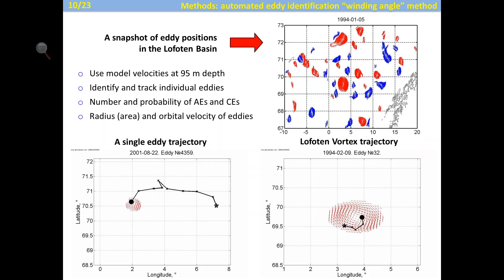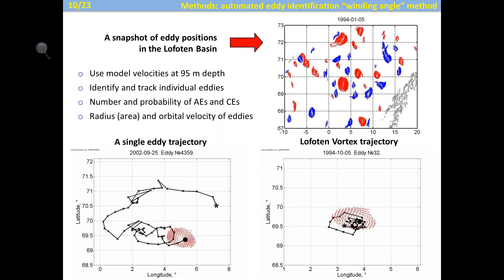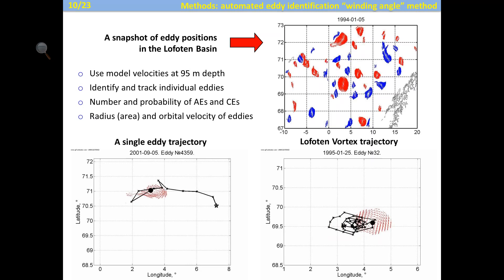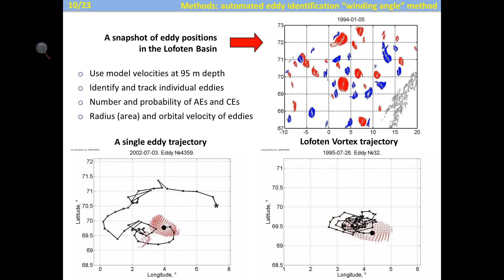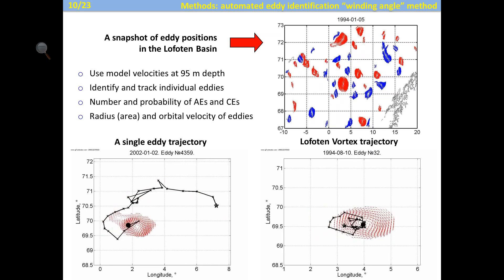Here you see a snapshot of eddy positions, with red showing anticyclones and blue cyclones. An example single eddy trajectory originates around the Norwegian Atlantic Current and then starts its cyclonic propagation towards the center of the basin. Here you see the trajectory of the Lofoten Vortex itself — it moves cyclonically, not anticyclonically. We use model velocities at 95 meters depth to identify and track individual eddies, and compute the number and probability of anticyclonic and cyclonic eddies, as well as the radius and orbital velocity of eddies.